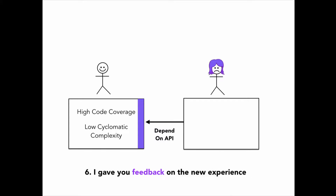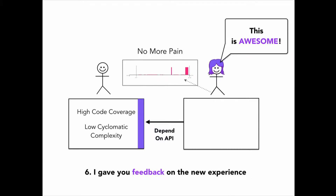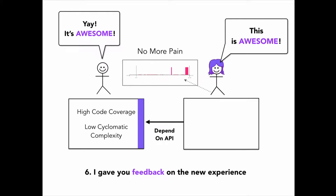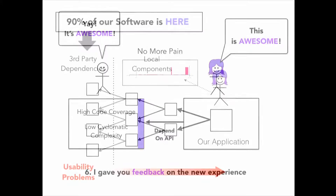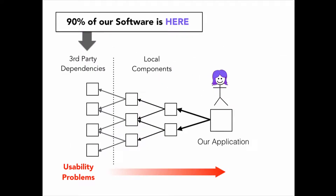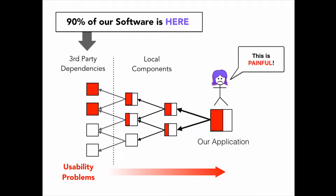And then I gave you feedback on the new experience. Now we've got a data-driven feedback loop for learning our way to awesome. The other challenge at a bigger level is that 90% of our software these days is built from existing parts and third-party components. We have the same challenge at a bigger level, and you've got components that have usability problems. The pain kind of rolls downhill.